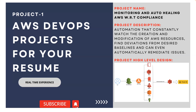The project description is: automation that constantly watches the creation and modification of AWS resources. Whenever somebody is creating an AWS resource — whether it's an S3 bucket, EBS, EC2 instance, or IAM-related rules or policies — this project will look for deviations. For example, your organization may decide that anyone creating an EBS volume must create an encrypted EBS volume.